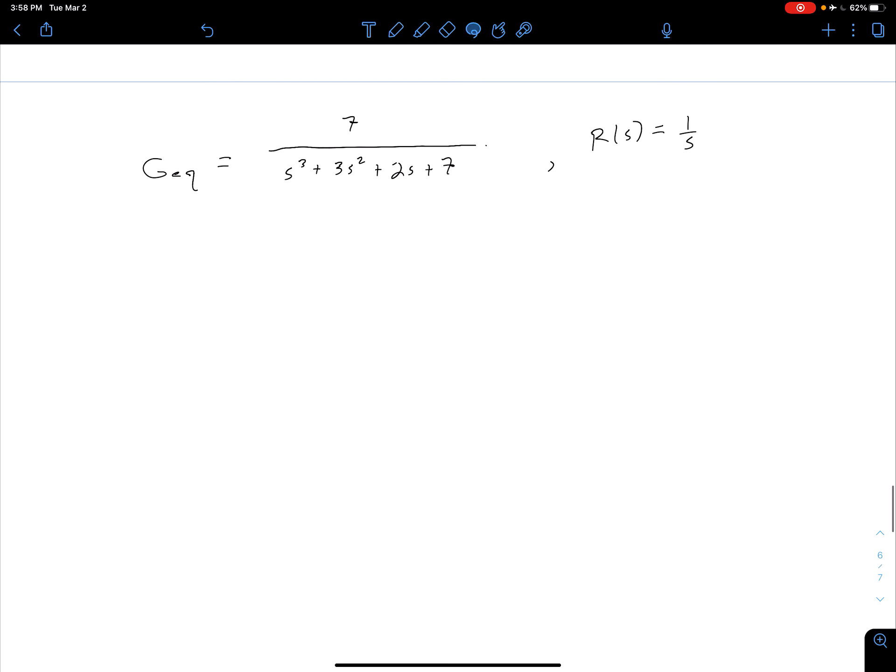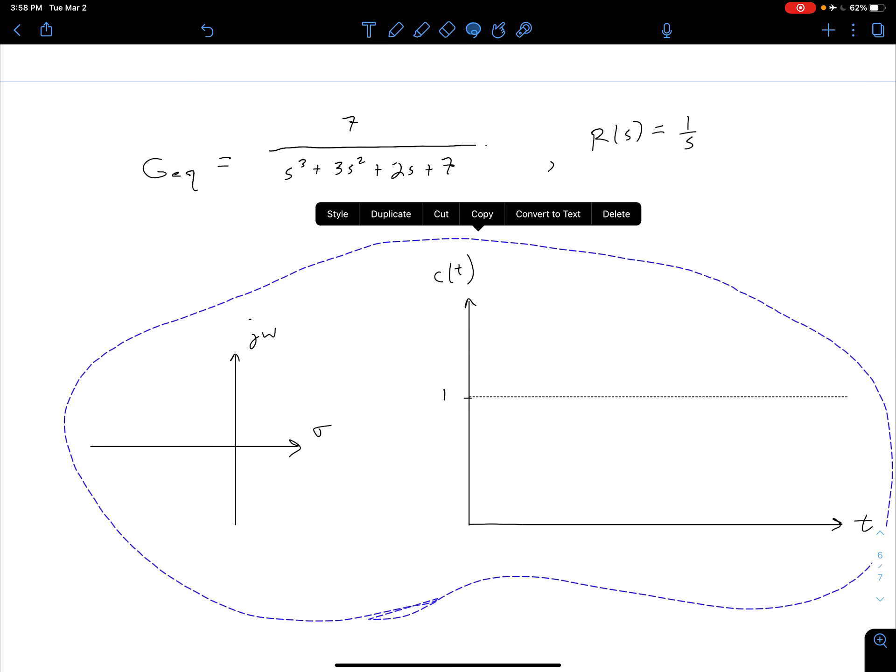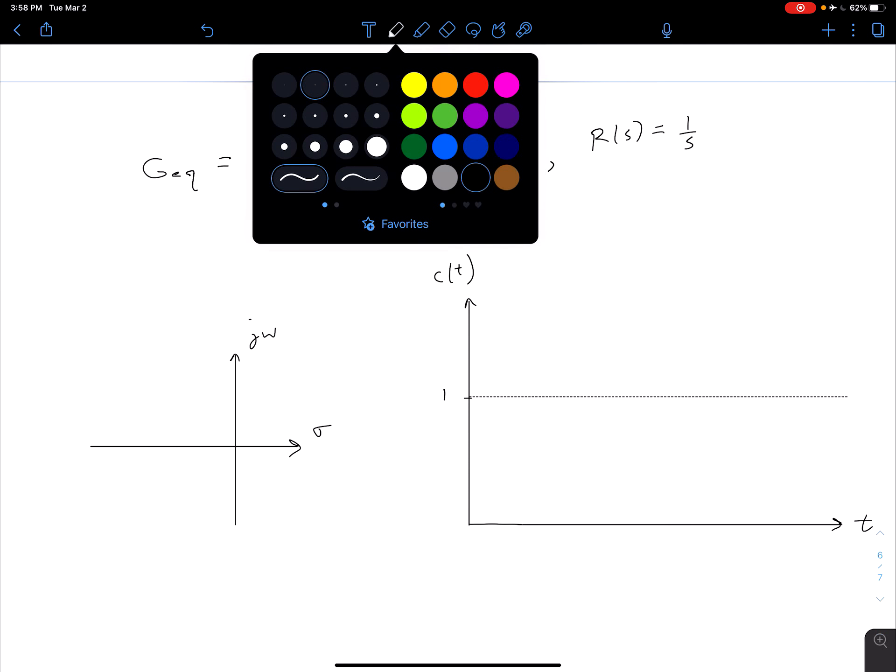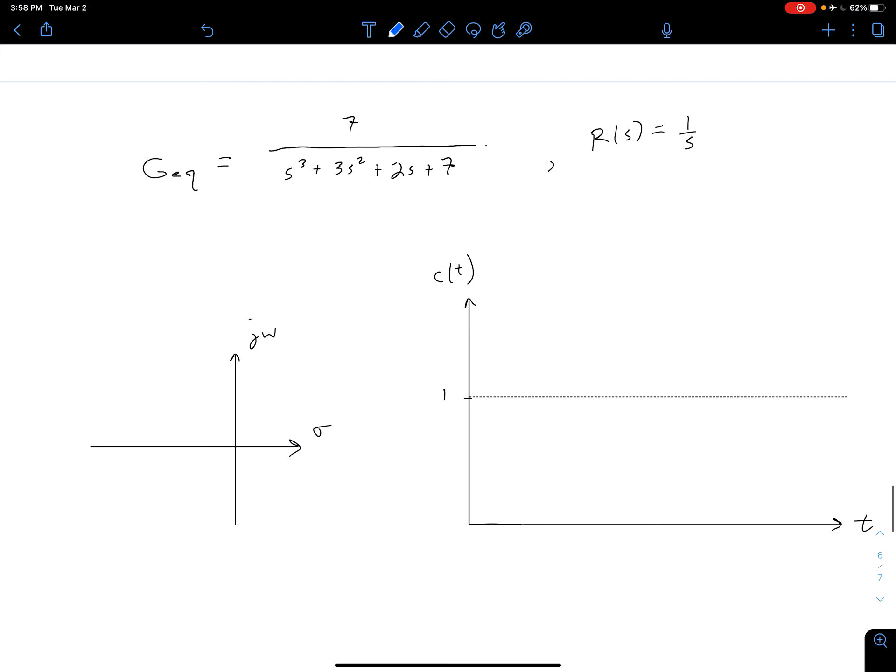And so in this case we could use whatever method we used before to figure out our pole locations and we're going to see that two of our poles are now in the right half plane. So we have a pole here, a pole here, and then that third pole is still a real pole like that.